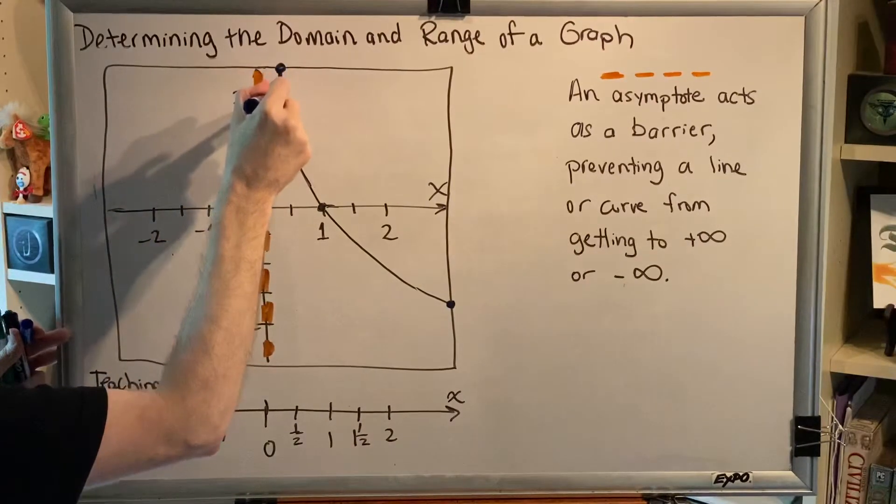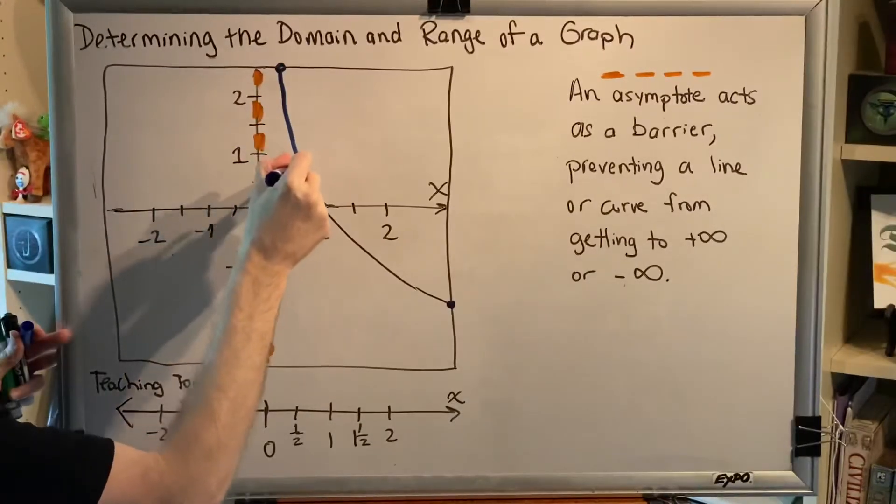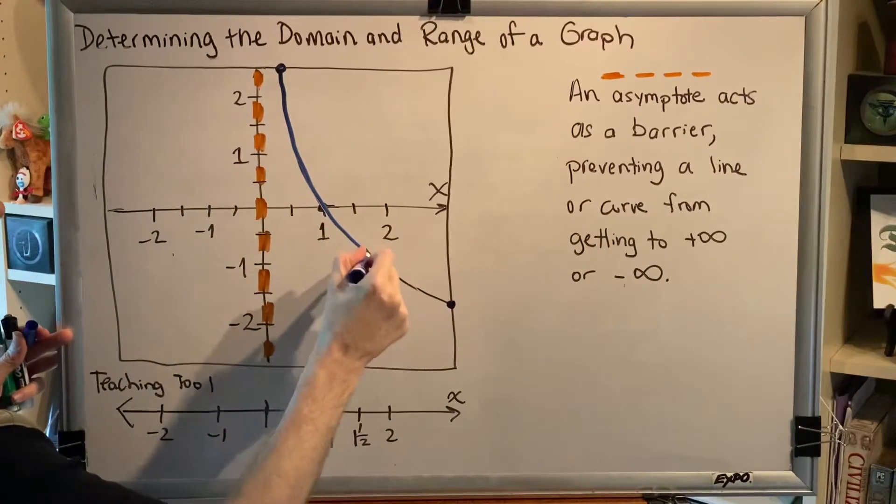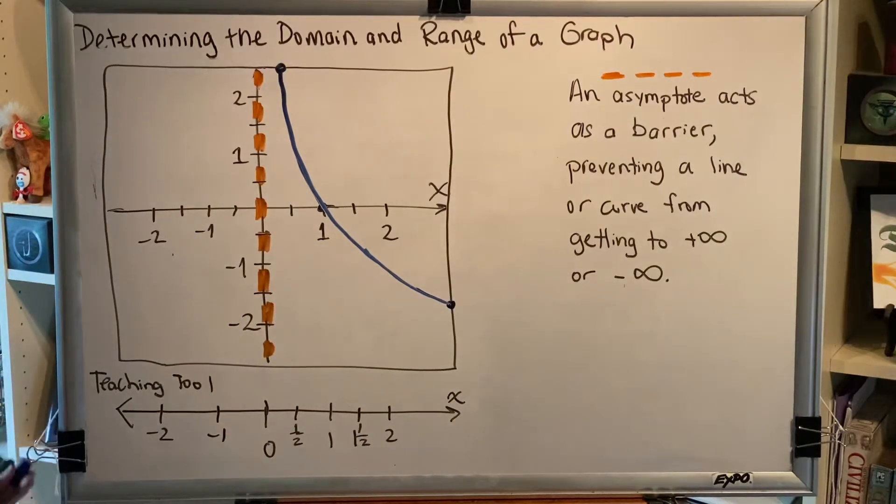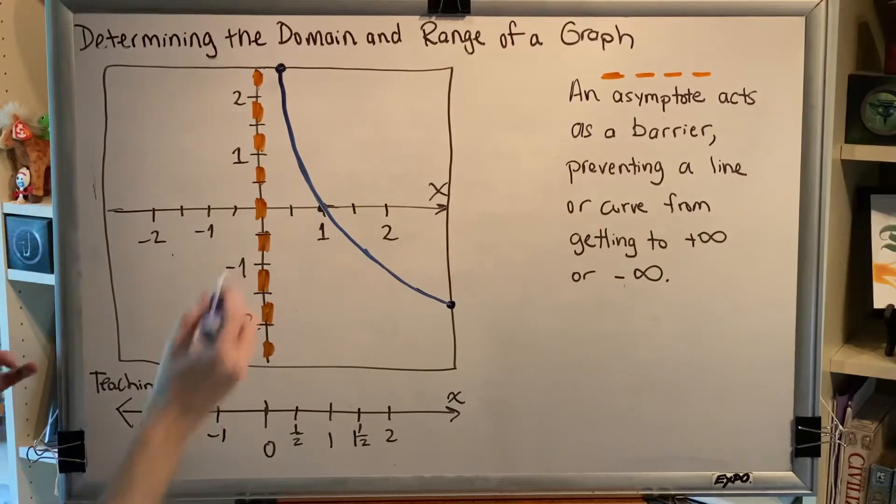So this means we get all of the x values from the leftmost point to the rightmost point. There's no gaps in the middle.